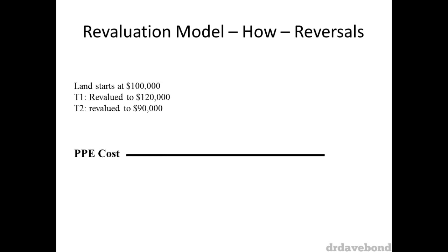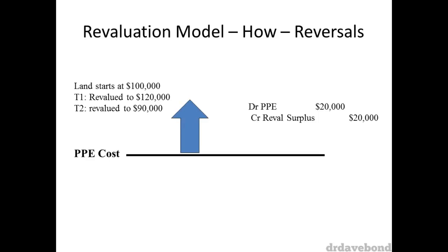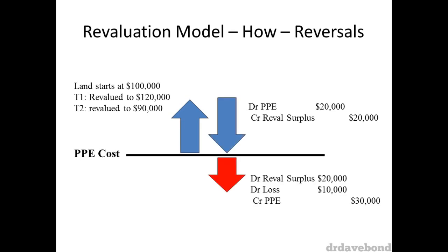For example, you have purchased land — a non-depreciable property, plant and equipment — for $100,000. Using the revaluation model, its fair value after one year was $120,000. This increment is recognised through equity: debit land $20,000, credit revaluation surplus $20,000. Then, one year later, it is revalued down to $90,000. Normally this would be debit loss, credit land. However, because this is a reversal of a previous revaluation, the first $20,000 goes through OCI. Once you have cleared the previous revaluation, the remainder goes through profit and loss — hence debit loss $10,000.